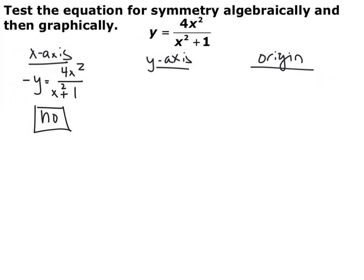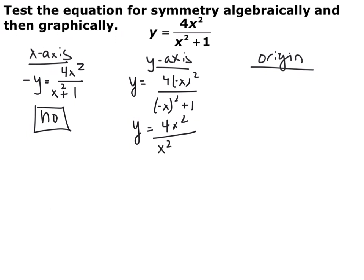Now we're going to try y-axis symmetry. Y-axis symmetry says for every positive x, you also have a negative x. So we replace every x with negative x. We have 4 times the quantity negative x squared over negative x quantity squared plus one, all equal to y. Negative x quantity squared is just the same as positive x squared. So the numerator simplifies to 4x squared and the denominator simplifies to x squared plus one. This is the exact same as the original, so this does in fact have y-axis symmetry.